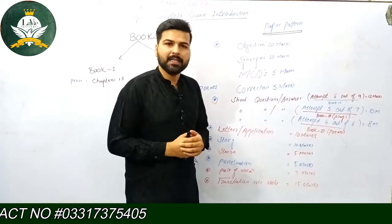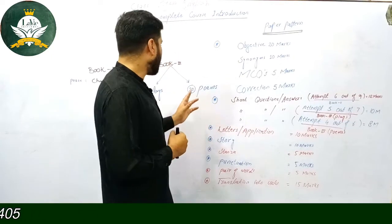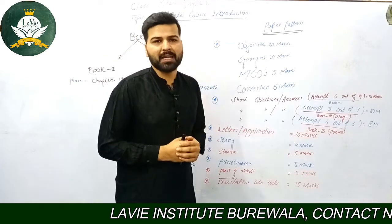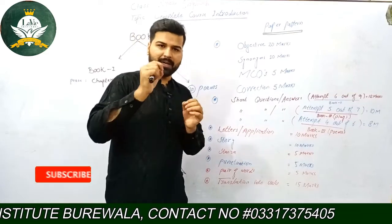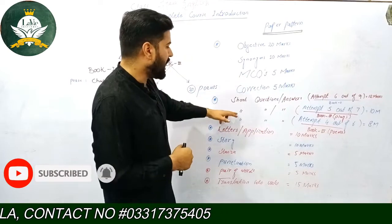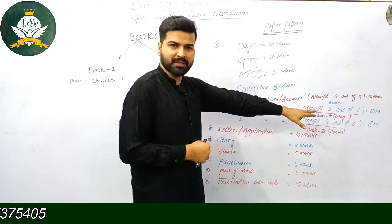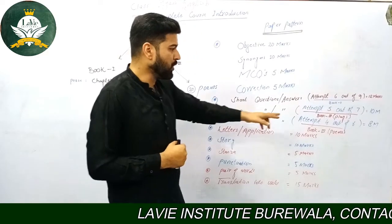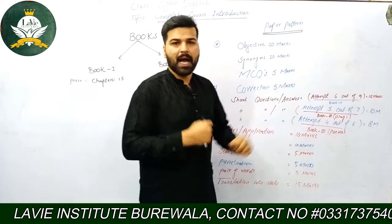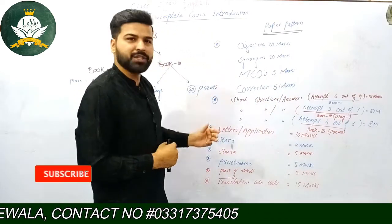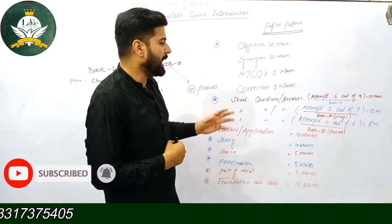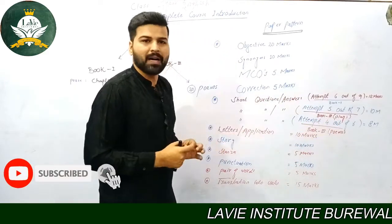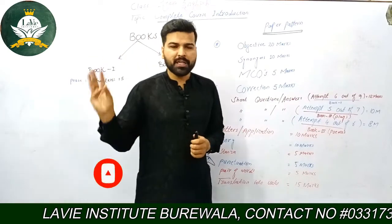اس کے بعد جو دوسرا سوال ہے subjective part کے اندر، وہ ہے آپ کا book three کے اندر سے۔ Book three کے اندر جو آپ کا پہلا part ہے plays کا، اس میں سے بھی آپ کو question answers آئیں گے، آپ کی comprehension اور writing skills کو check کرنے کے لیے۔ وہ short questions total 7 دیے ہوں گے، آپ نے اس میں سے 5 questions attempt کرنے ہیں، جو کہ total 10 marks بنیں گے۔ اس کے بعد points میں سے تیسرا question بھی question answers کا ہے، اور اس کے اندر آپ کو total 6 questions دیے ہوں گے، آپ نے اس میں سے 4 questions attempt کرنے ہیں جن کا total 8 marks ہوں گے۔